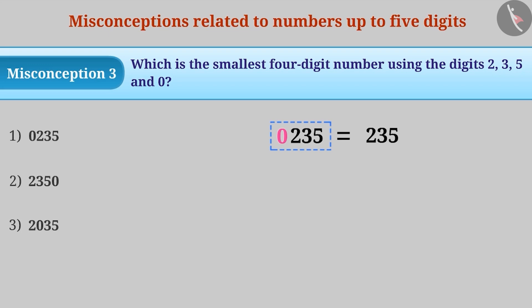Many times, without understanding the question, we select option 1 to be the correct answer since we see it as a 4-digit number beginning with the smallest digit 0. This is a misunderstanding.